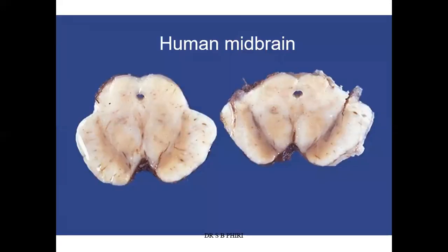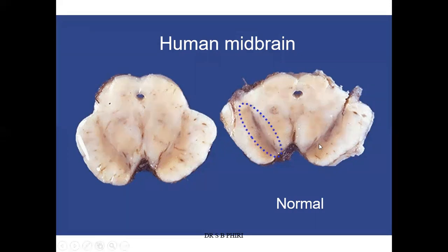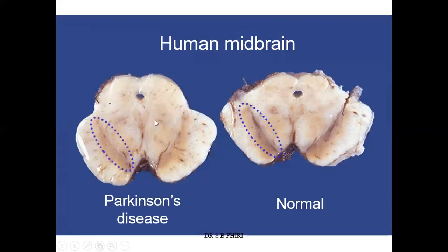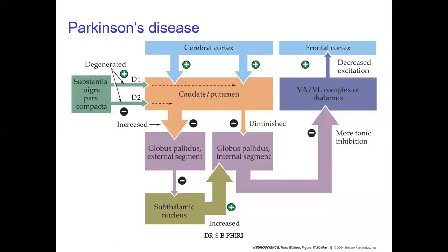If you look at a cross-section of the brain from someone who has suffered from Parkinson's disease, you can't really appreciate the substance that looks black — the substantia nigra. In a normal person, you can see this black substance clearly in the midbrain cross-section. But in individuals who have suffered from Parkinson's disease, you can't appreciate it because those neurons are destroyed.